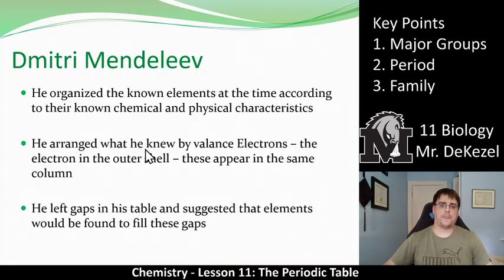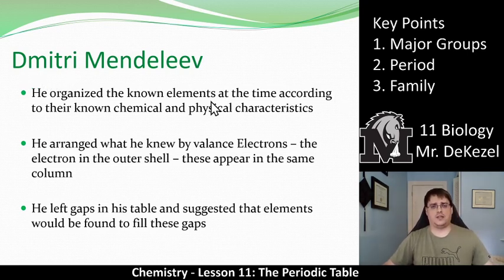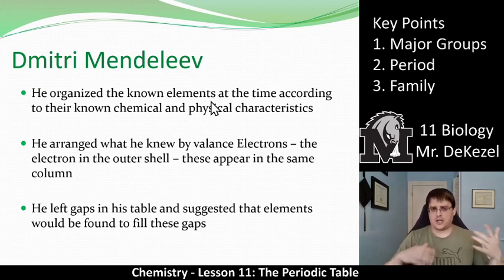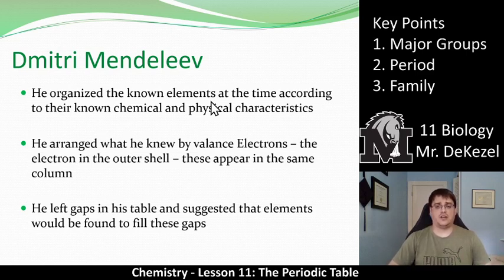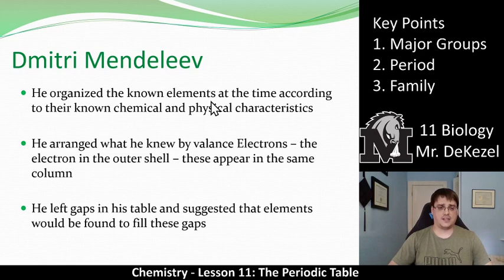We'll talk more about the periodic table and how we got to what we have today. First of all, there is this guy Dimitri Mendeleev. What he did was he organized the elements that he knew at the time according to their chemical and physical characteristics to attempt to put them in a chart similar to what we know today. But he didn't really know anything about valence electrons — he just knew their chemical and physical characteristics. What happened was that he arranged those that he knew by valence electrons essentially without really realizing it. He left gaps in the table and suggested that there would be elements found to fill these gaps.